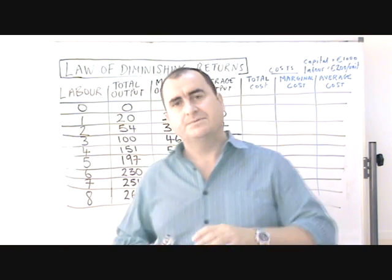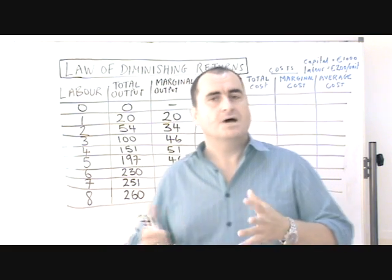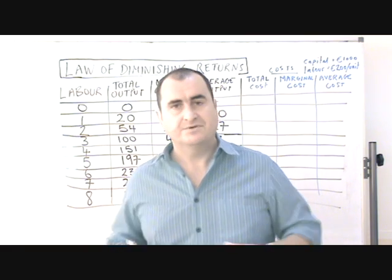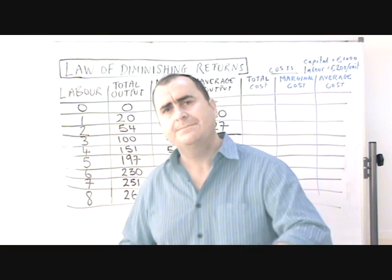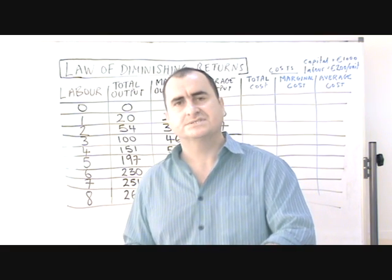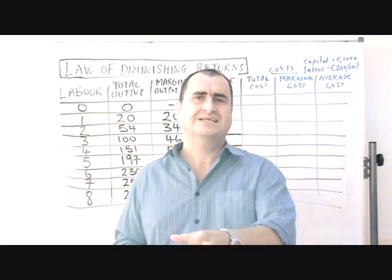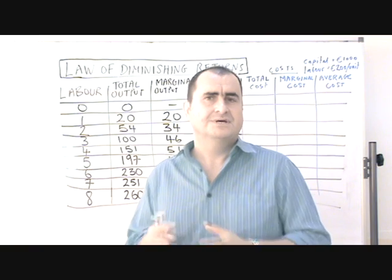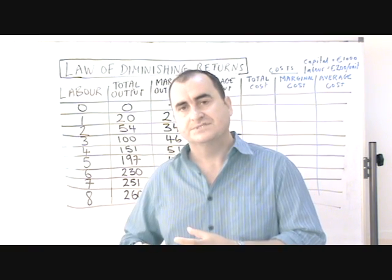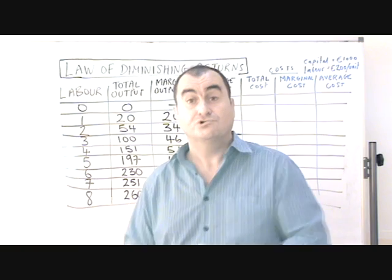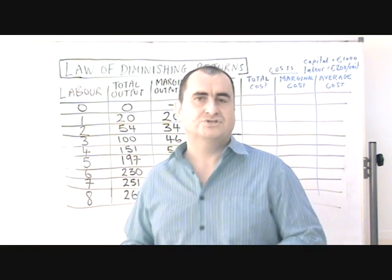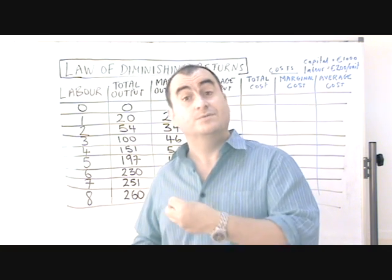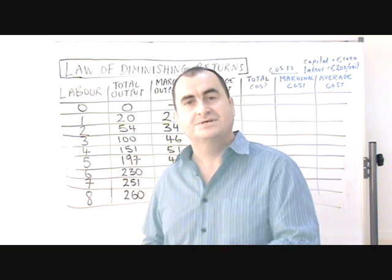That sounds a bit wordy, so let me break it down. Imagine a business where they have a fixed amount of capital and land — a fixed number of machines in a fixed space — and they keep adding more and more workers trying to increase their output. Eventually they're going to find that even if the workers are perfectly adequate, with no difference between these units of labour themselves, there's just too much labour relative to the capital and the land, and eventually the extra output produced by an additional worker will be less than the extra output of the worker before them.